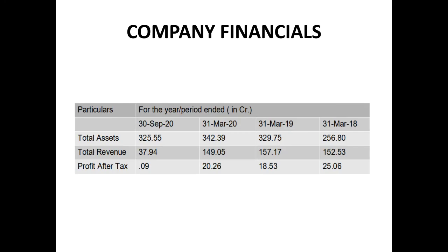Now let's know about the company financials. The total assets for the company for 31st March 2018 is 256.80, 329.75 for 31st March 2019, and 342.39 for 31st March 2020.